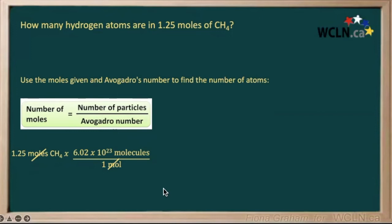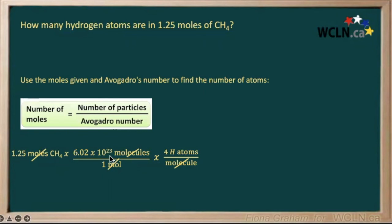So we have to make sure we take that into account. We multiply our answer by four, because we have four hydrogen atoms per molecule of methane, and our molecule units will cancel out. Now we just multiply 1.25 times Avogadro's number times four to give us the number of atoms. So our final answer is 3.01 times 10 to the 24 atoms of hydrogen.